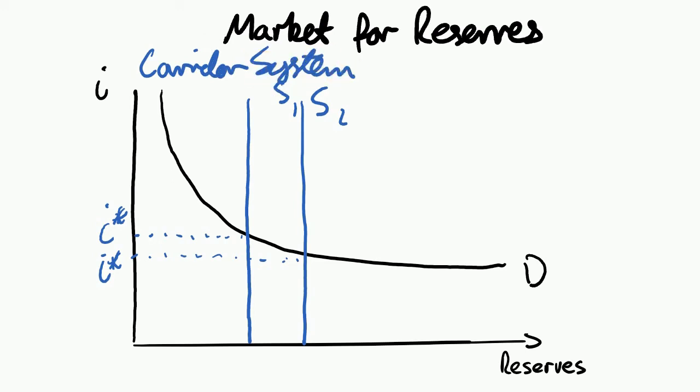It was called the corridor system because the central bank also imposes a ceiling and a floor on the interbank market. It imposes the ceiling by setting the interest rate that it charges to lend to banks — the central bank also lends money to banks in order to make their reserve requirements and charges them a certain interest rate to do so. Because the central bank has unlimited lending capacity, no other bank is going to be able to charge more. If the central bank is offering you money at say five percent, you're not going to borrow from another bank at five point five percent.